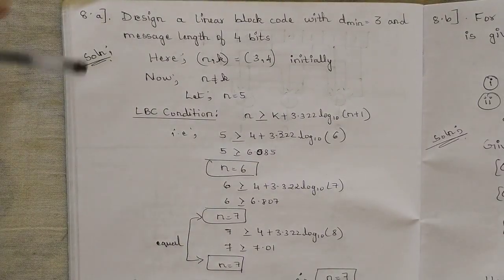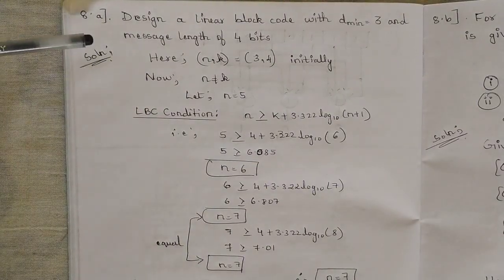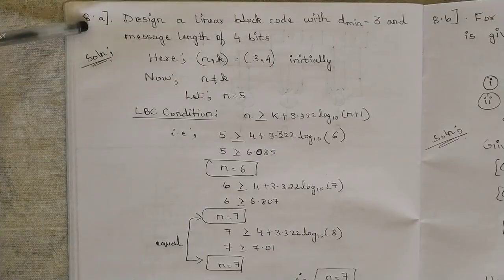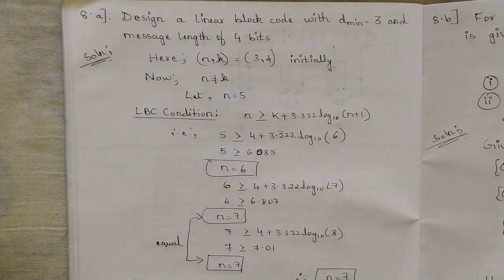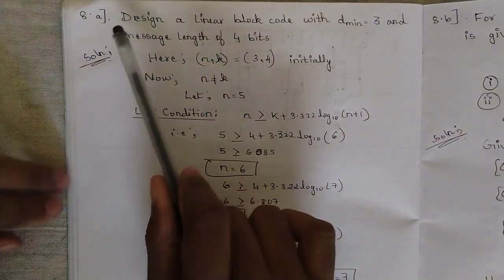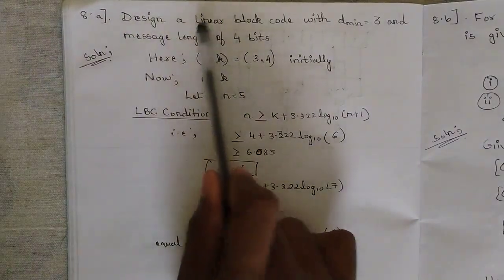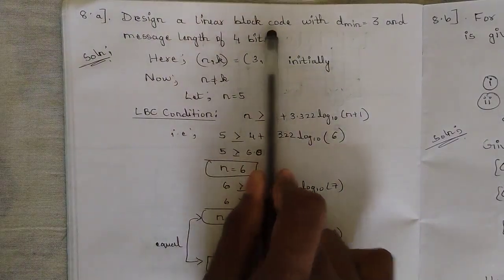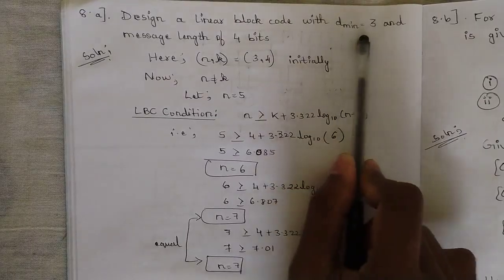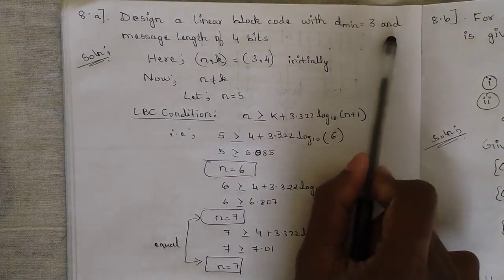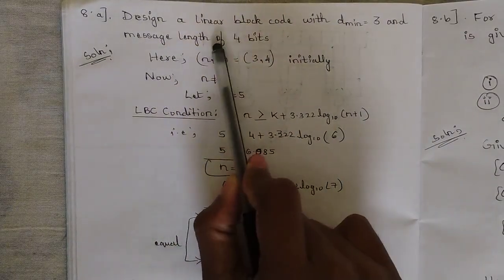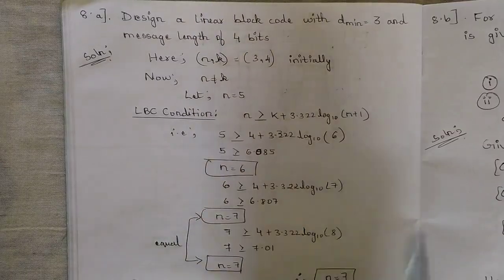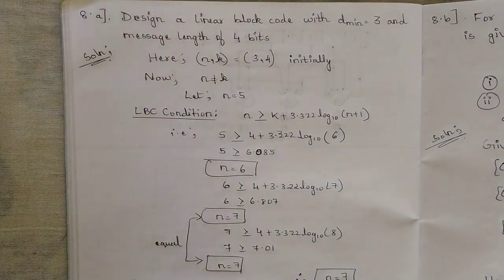This is the next question in the model paper 8a. It is given for four marks. The question is: design a linear block code with the minimum distance dmin equal to 3 and the message length given as 4 bits.